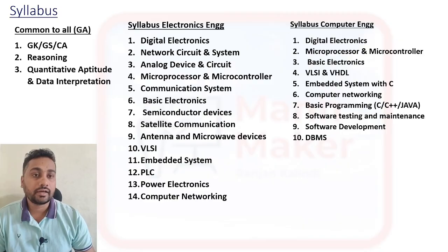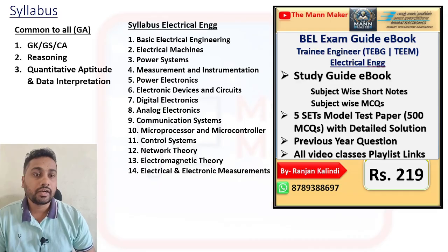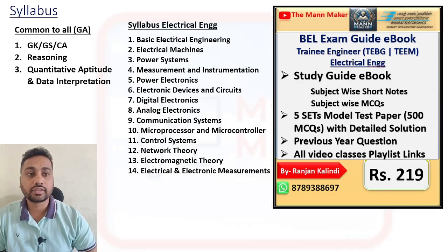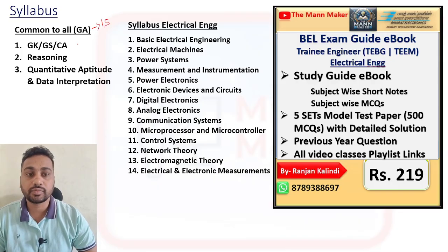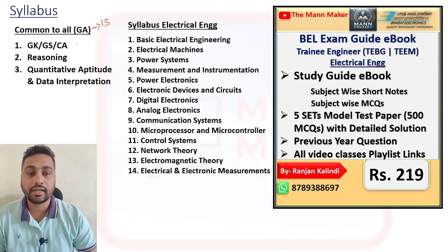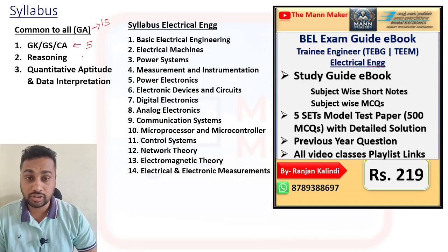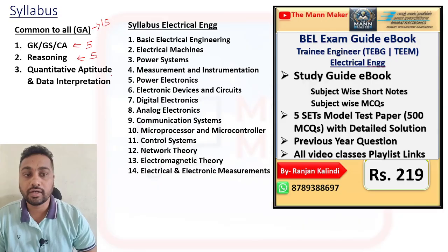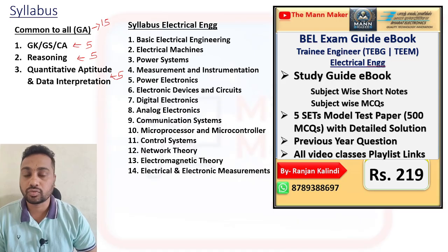As I discussed electronics and computer before, today we are going to discuss about electrical engineer. For electrical people, 15 marks are asked for the non-technical section. In that you will get 5 questions from GK/GS and current affairs, 5 questions from reasoning, and 5 questions from quantitative aptitude and data interpretation — so total 15 questions for 15 marks.